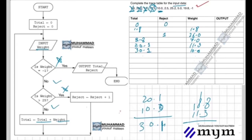Next input is 2.5. We check: is the weight minus one? No. Is it greater than 25? No. So it gets added to the total. We add the last total value 30.1 plus 2.5, which gives us 32.6.